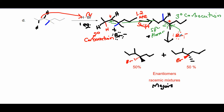Imagine the molecule sitting on your desk — the nucleophile can attack from the top face or the bottom face with equal chance. You get two possible answers: one obtained when Br attacks from the top (methyl goes back as a dash), and the other when bromide attacks from the bottom (methyl is a wedge). These are enantiomers and form a racemic mixture.